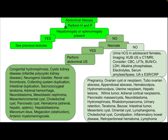After performing history and physical examination, the approach to the child with an abdominal mass is as follows. First, determine whether hepatomegaly or splenomegaly is present — if so, refer to the previous lecture. If not, determine whether the patient is a neonate; if yes, perform abdominal ultrasound.